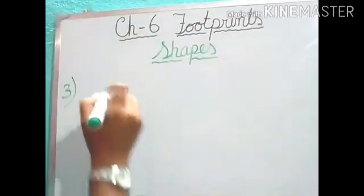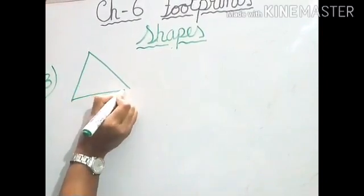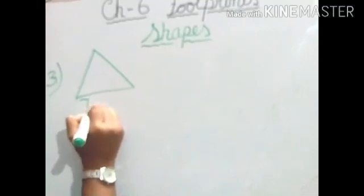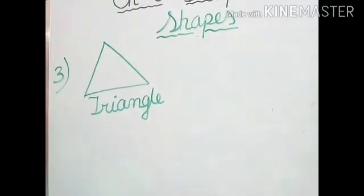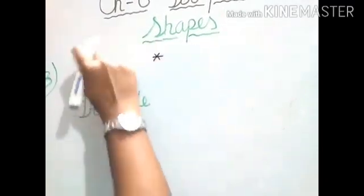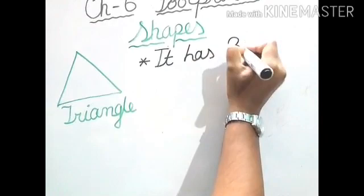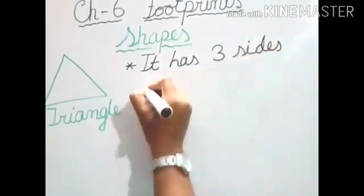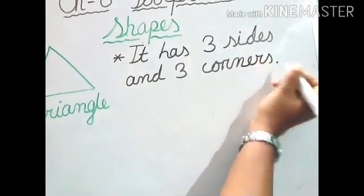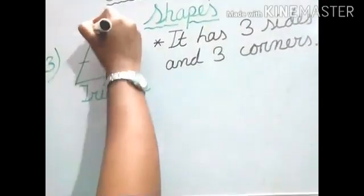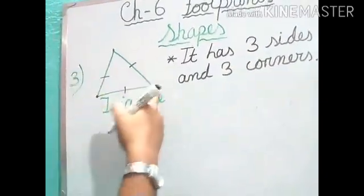Number three: Triangle. Triangle has how many sides? Can you tell me? One, two, and three. Triangle has three sides. First write the spelling: T-R-I-A-N-G-L-E, Triangle. Now let us write the property. It has three sides and three corners. This is the corner where the two line segments are joining. One, two, three — three corners.